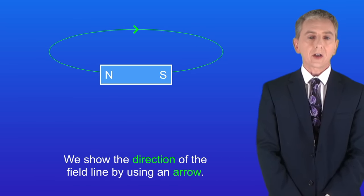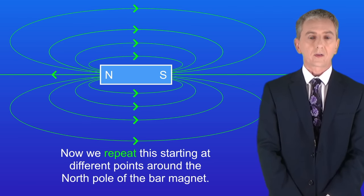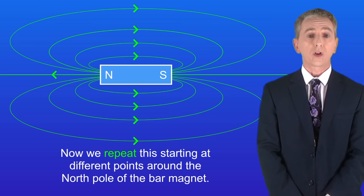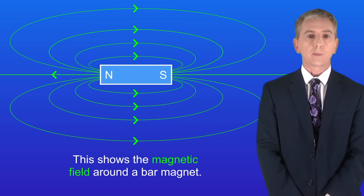And we show the direction of the field line by using an arrow. Remember that the direction always runs from the north pole to the south pole. Now we repeat this starting at different points around the north pole of the bar magnet. So this shows the magnetic field around a bar magnet.